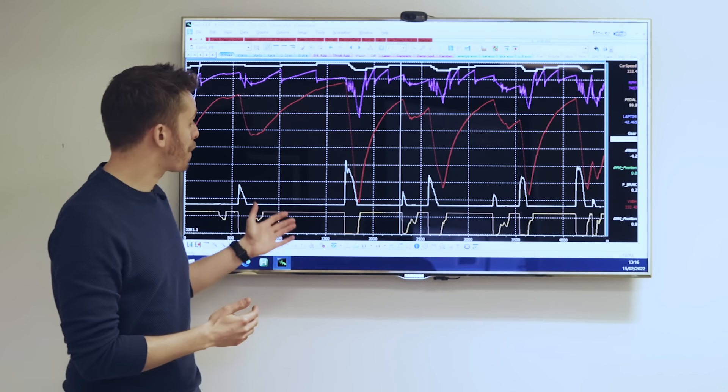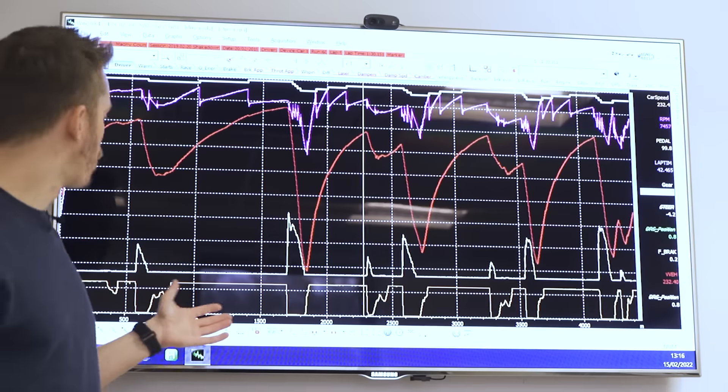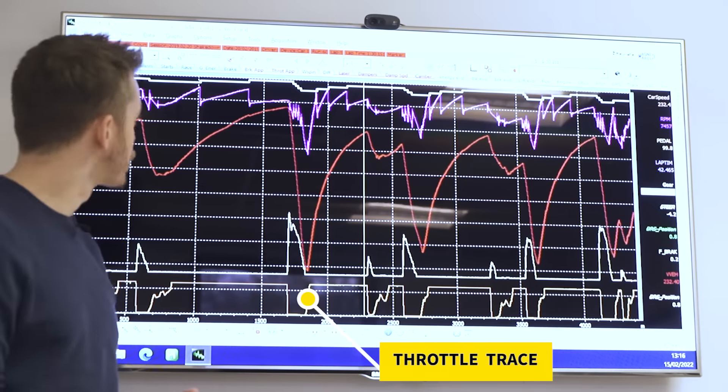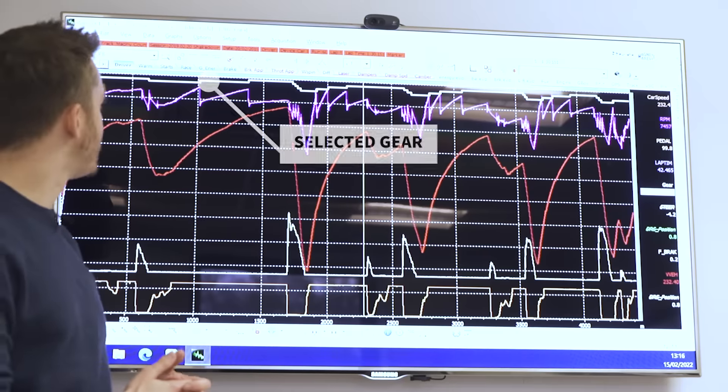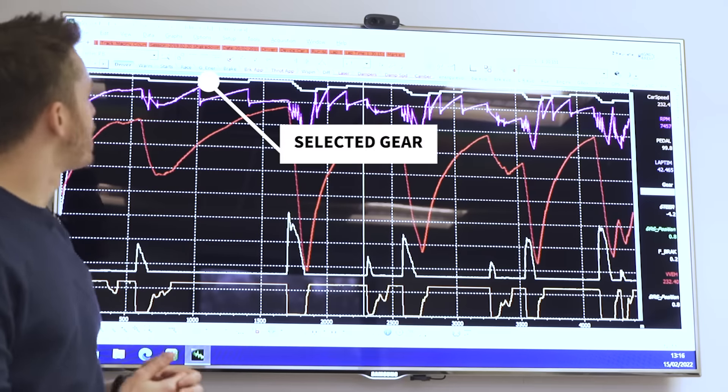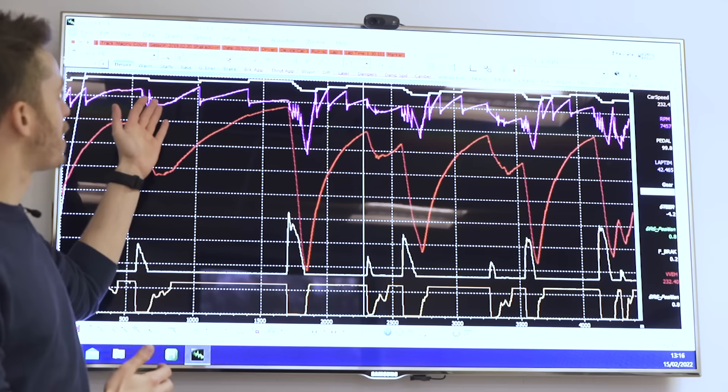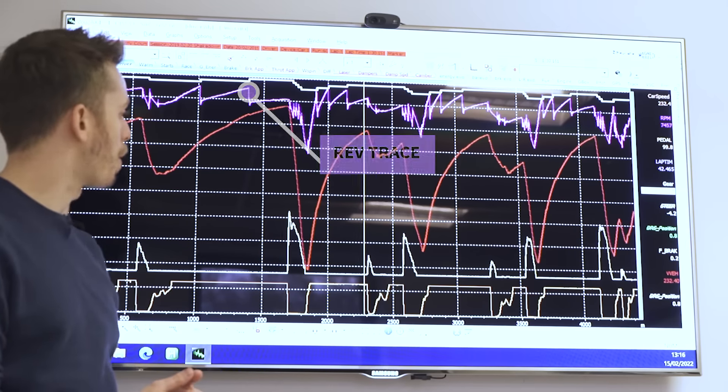They can compare how they've applied the throttle, how hard and when. The throttle trace is in yellow at the bottom of the screen, or indeed which gear they're in through each of the corners in this white trace at the top of the screen, in comparison to their rev trace in purple also here towards the top.